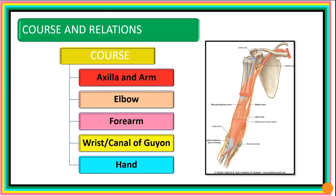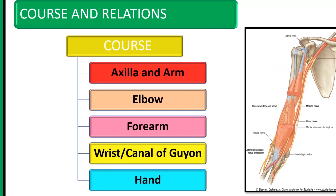We'll now consider the course and relations of the ulnar nerve. We'll look at the course in the axilla, then the arm, then the elbow, the forearm, the wrist as it runs through the canal of Guyon, and then the hand.